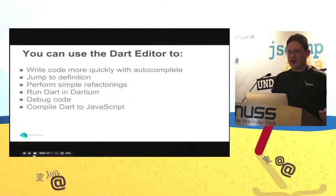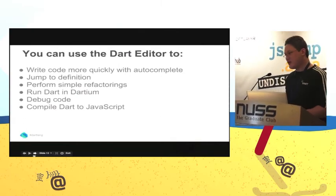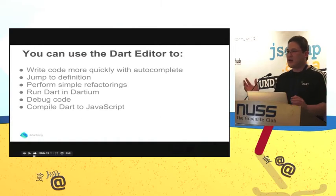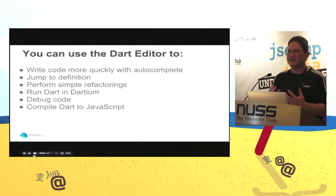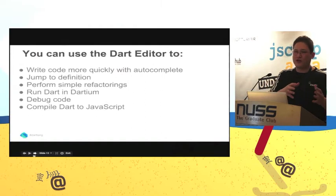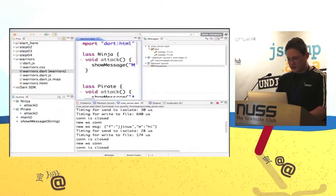You can use the Dart editor to write code more quickly with autocomplete, jump to definition, perform simple refactorings, run Dart in Dartium, debug code, and compile Dart to JavaScript. The nice thing about the Dart editor is that it's actually fairly hard to make a super rich IDE with JavaScript — you can't do something as nice as IntelliJ. WebStorm is nice, but without static type annotations and more language support, it's really hard to do a very advanced IDE. Dart solves a lot of those problems.